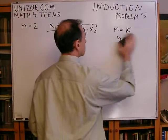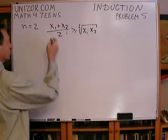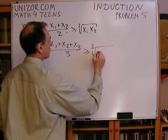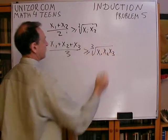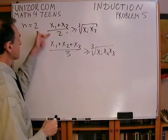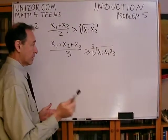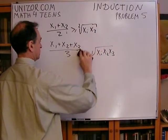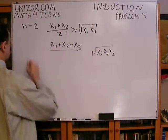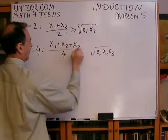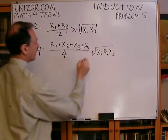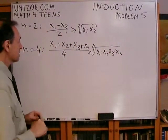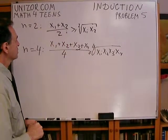However, in this particular case it's not that easy, because if you go to n equals 3, it's not obvious how to get there from n equals 2. However, let's make another observation. If I use n equal to 4 instead, I have four numbers and I have to prove that their arithmetic average is greater than the fourth root of their product. This is actually quite easily deducible from the previous one.